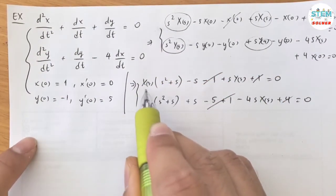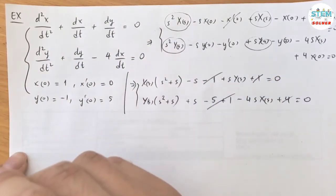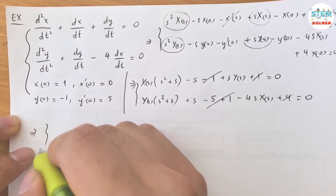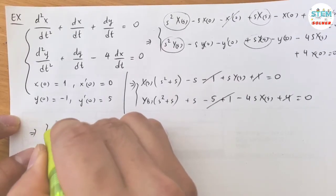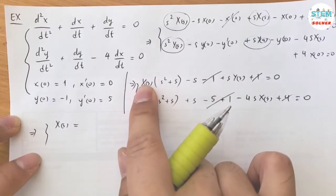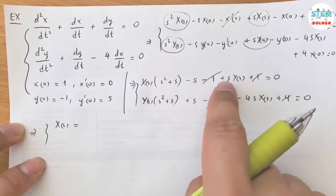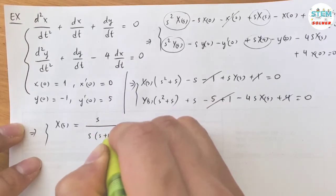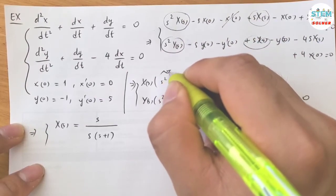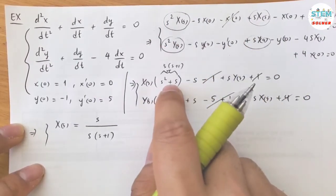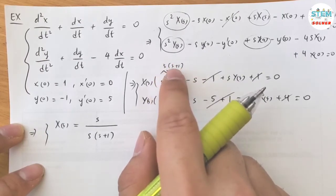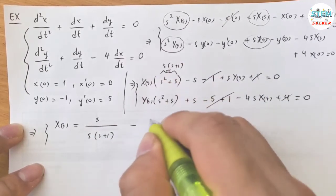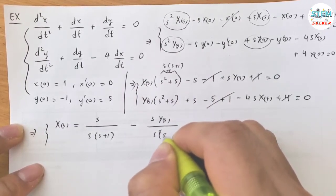Now solve for X of s and Y of s. X of s equals s over X of s. This is the same as s times s plus 1 — factor out s — so when you distribute it's s squared plus s. So you have s over s times s plus 1. For this one, negative s capital Y of s over s squared times s plus 1.